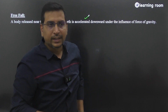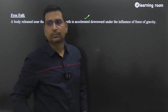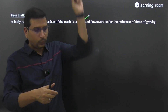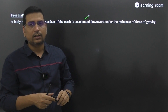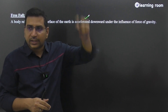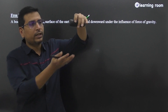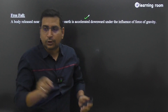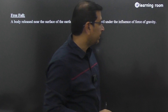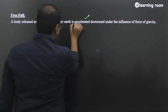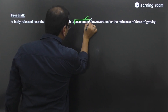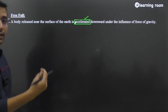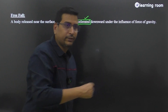When I use the word 'dropped,' the initial velocity is zero. If I drop it with a velocity, then I am not dropping it — I am just giving it a velocity. Whereas if I hold it and release it, I am dropping it with an initial velocity of zero. So the object accelerates in the downward direction under the influence of the force of gravity.